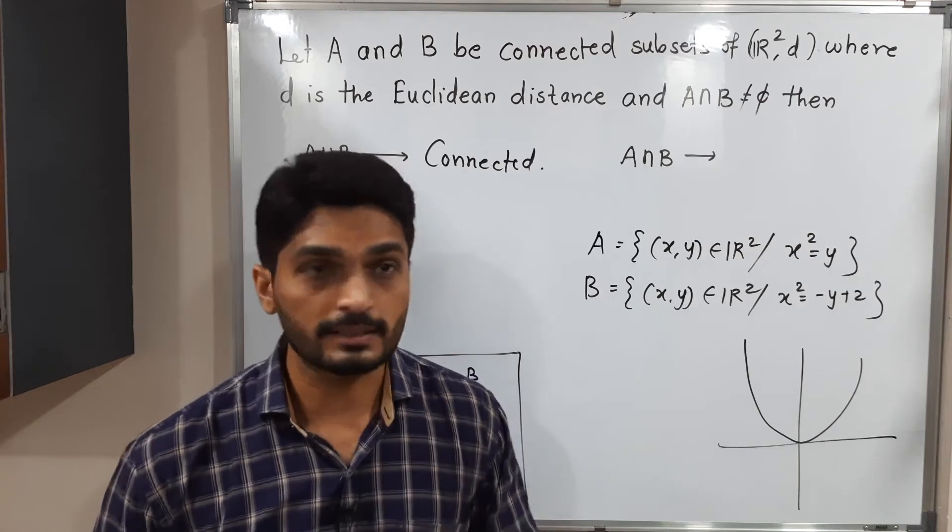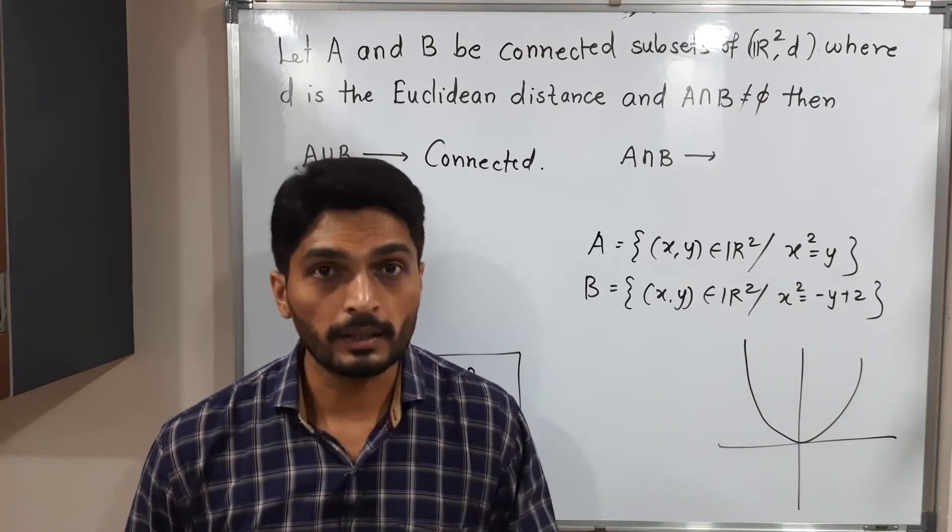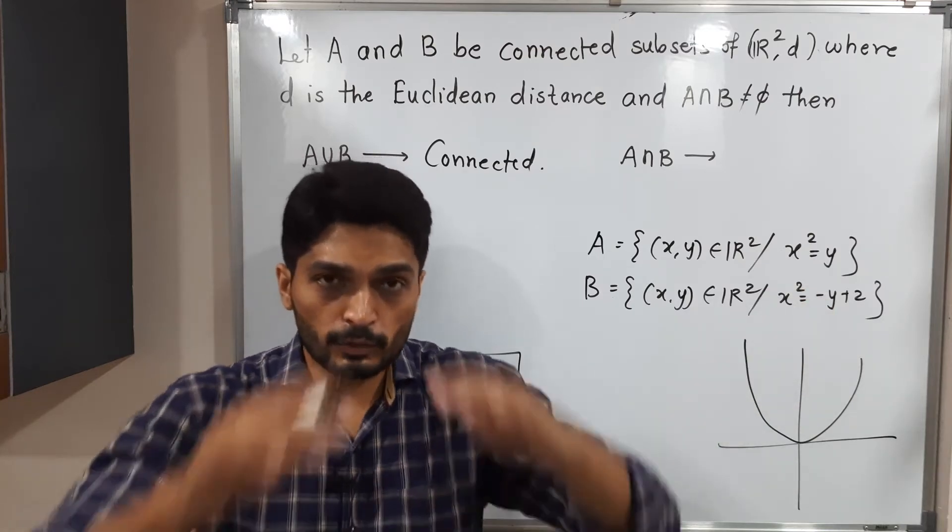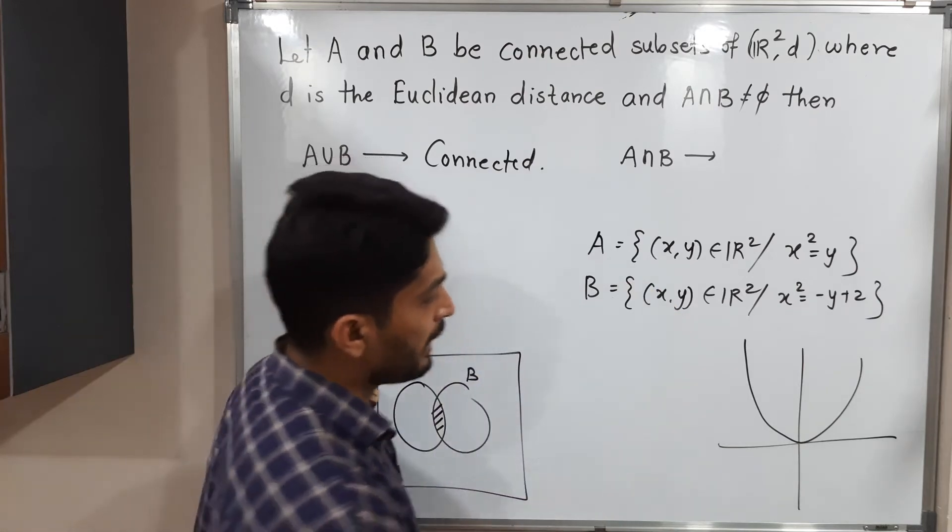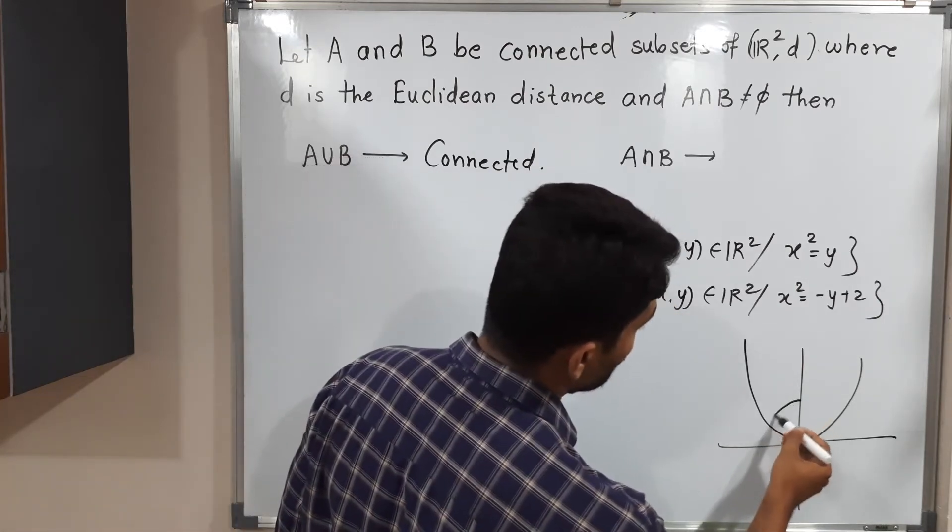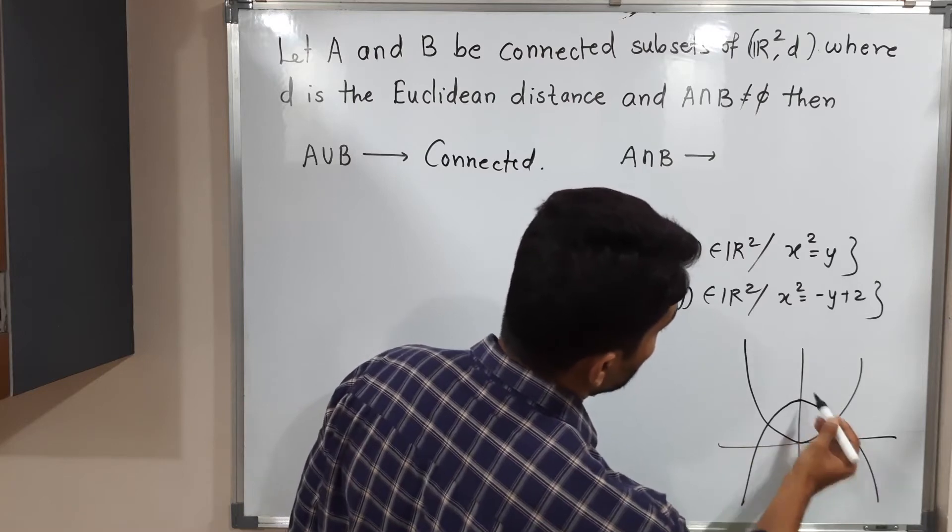This is the equation of a parabola again. It is symmetric about the Y axis, since the power of Y is 1, but Y has a minus sign. That's why the parabola opens in downward direction. So the parabola will be like this, which intersects the Y axis at point (0,2).